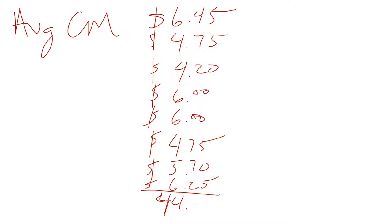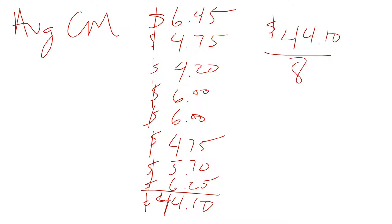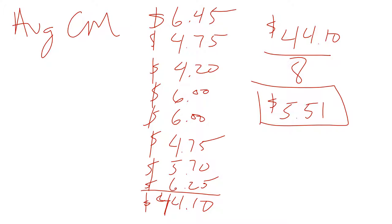Our total is $44.10. We have eight menu items, so we take $44.10 and divide by 8. That gives us $5.51. That is our average contribution margin — the number we'll use to compare each menu item.